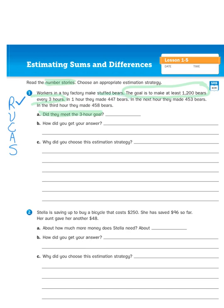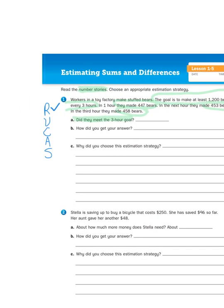In one hour, they made 447 bears. In the next hour, they made 453. In the third, they made 458. So I have now underlined the first part of the problem, and I circled some important information. The goal was 1,200, and they listed their hourly goals for three hours straight.